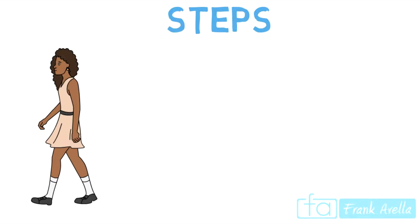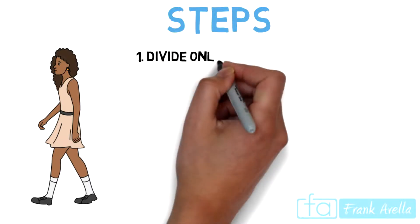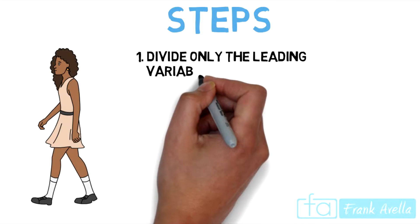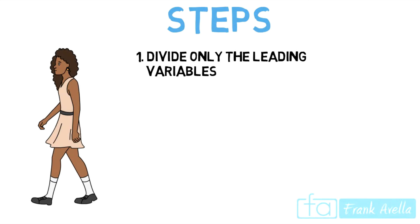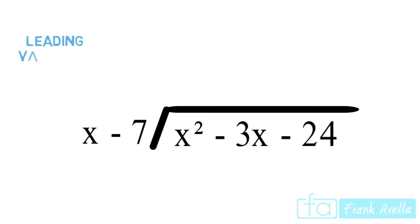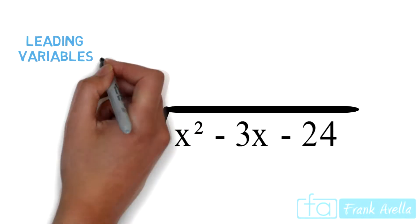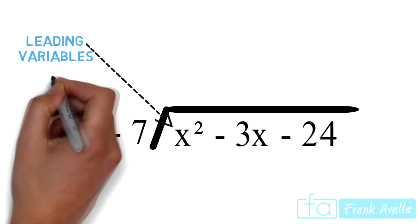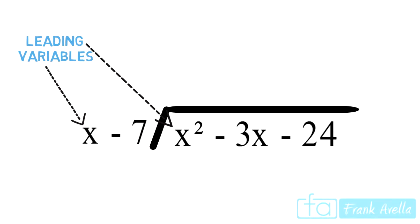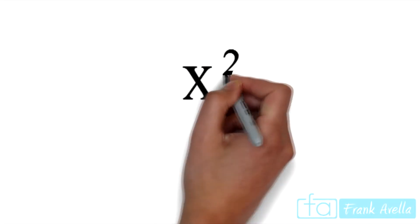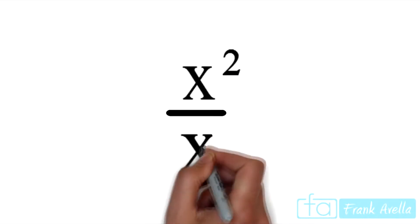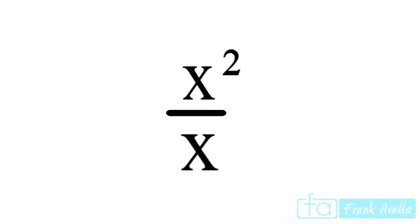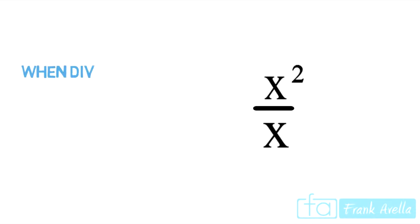I'm going to run down a couple of steps. We begin with Step 1, which is to divide the leading variables. The leading variable inside the dividend is x squared, and our other leading variable will be x, so that gives us x squared divided by x.